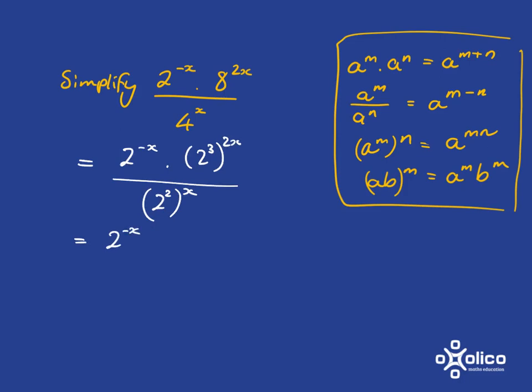So now we can go ahead and use this rule. A to the m all to the n is a to the mn. So it's 2 to the 3 all to the 2x is 2 to the 3 times 2x, which is 2 to the 6x. And the same thing for the same rule we'll use at the bottom. It's going to be 2 to the power of 2x.